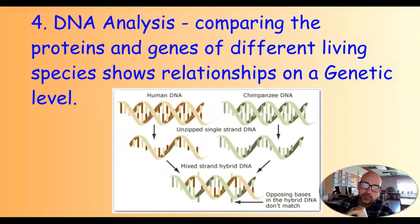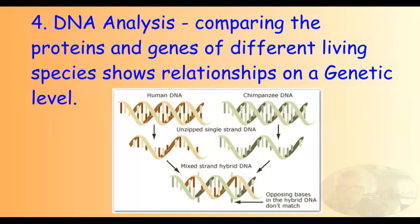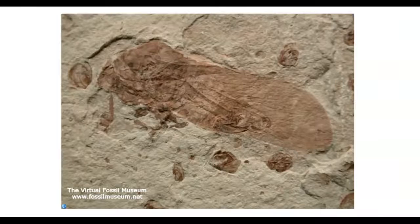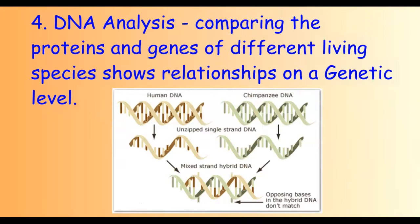Our fourth and most modern way of looking at evolutionary relationships is DNA analysis. Through the discovery of genetics and genes and being able to extract and compare the code, we can compare the proteins and genes of different living species to show genetic relationships. We now know that humans and bananas share about 50% of the same genes, humans share about 99% of the same genes as a chimpanzee, and you share 99.999% of the same genes as anyone else on the human race — homo sapiens. So let's get along, people, because we're all basically the same.